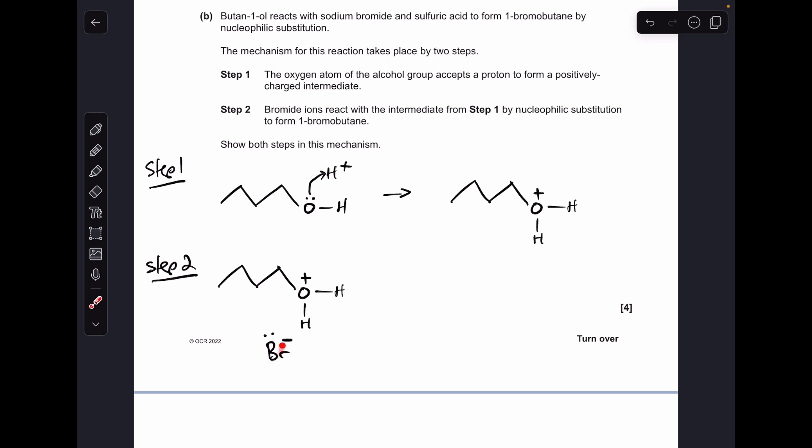And then in step two, we're told the bromide ions react with the intermediate by nucleophilic substitution to form the 1-bromobutane. So there's a couple of ways you can do this. The straightforward way is to take the curly arrow from the pair of electrons and the Br-minus ion to this carbon here. And then we just need to boot off that H2O part by a curly arrow from that bond there. Which would obviously give the 1-bromobutane and an H2O molecule.